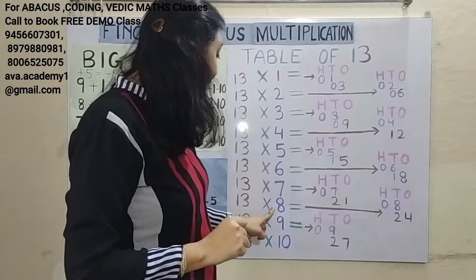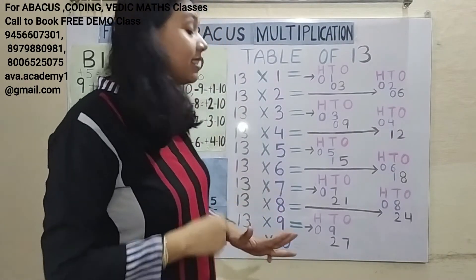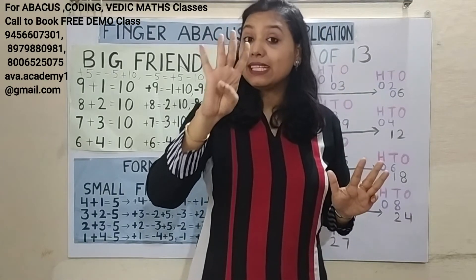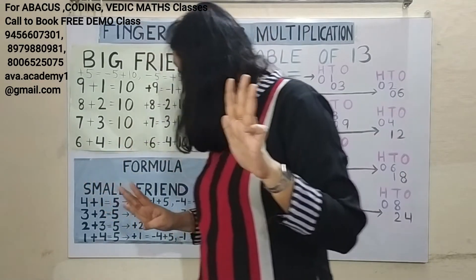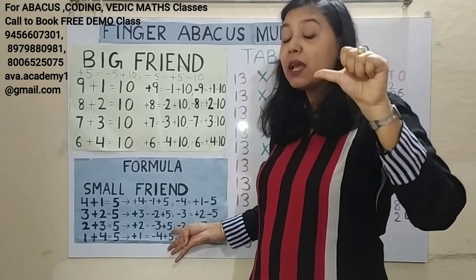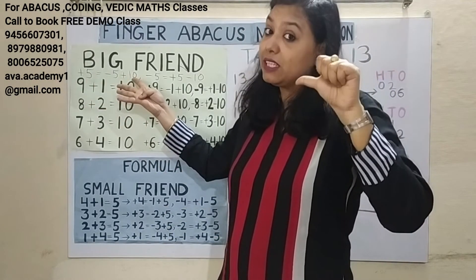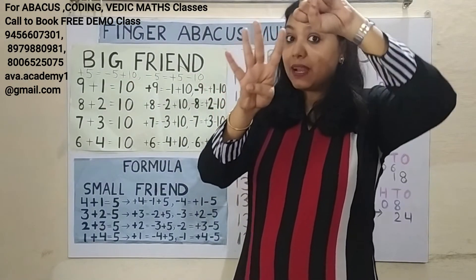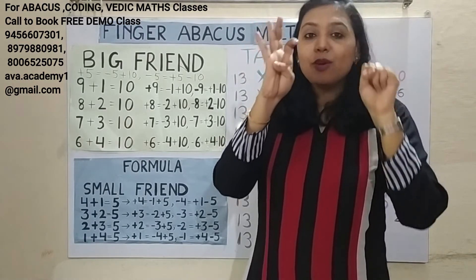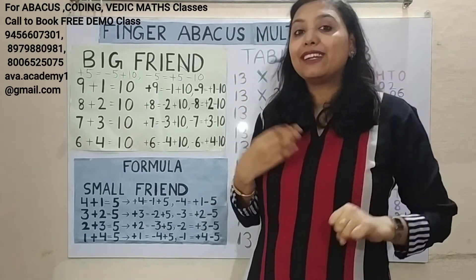Next, 13 eights: 1 eight is 8. In 100s: 0. In 10s: 8. 3 eights are 24. In 10s we add 20, in 1s we add 4. We can easily add 4, but to add 2 here: the plus 2 formula is minus 3 plus 5, so the plus 20 formula is minus 30 plus 50. But we cannot add 50 here, so the plus 5 formula is minus 5 plus 10, meaning the plus 50 formula is minus 50 plus 100. So the answer is 104: 1 in the 100s, 0 in the 10s, and 4 in the 1s.